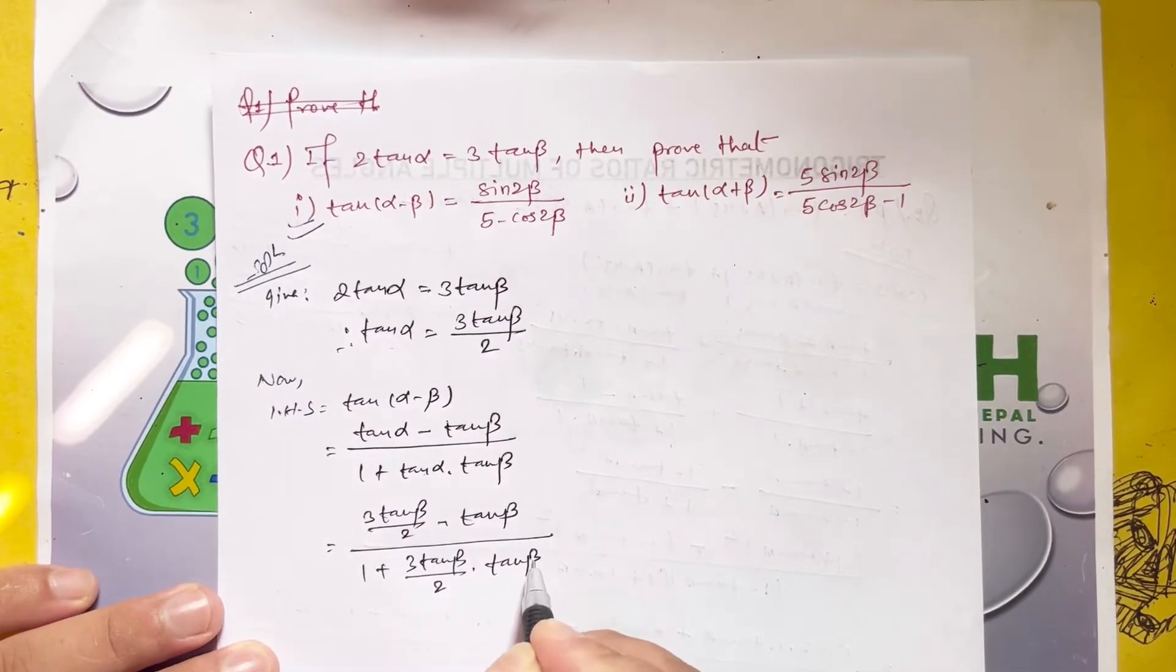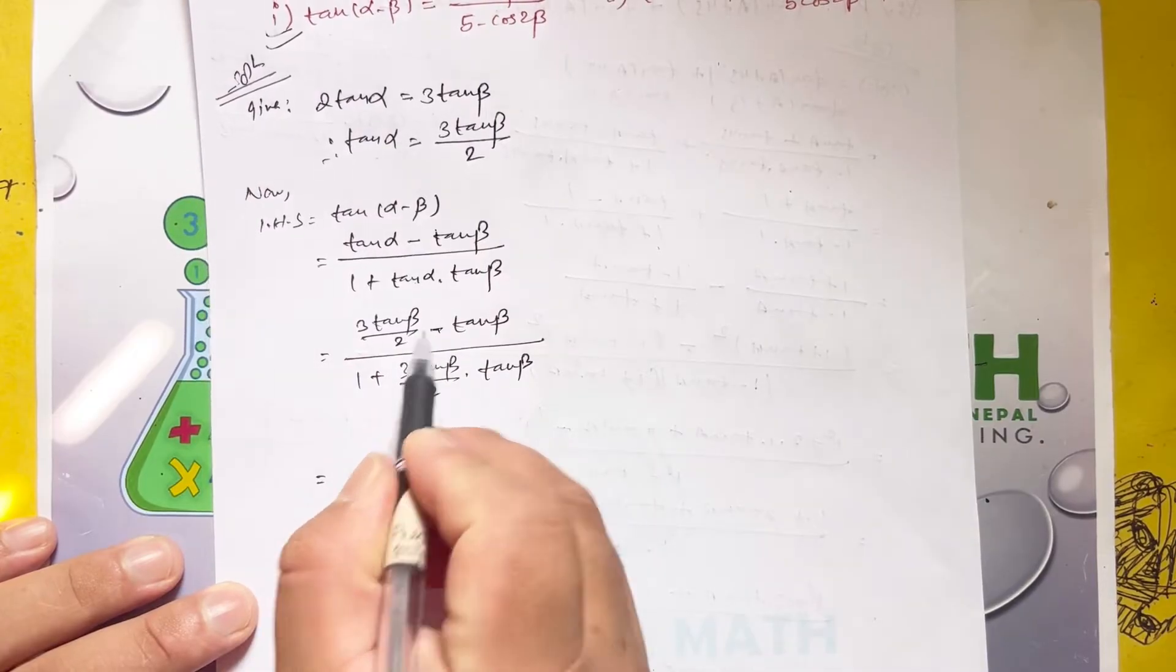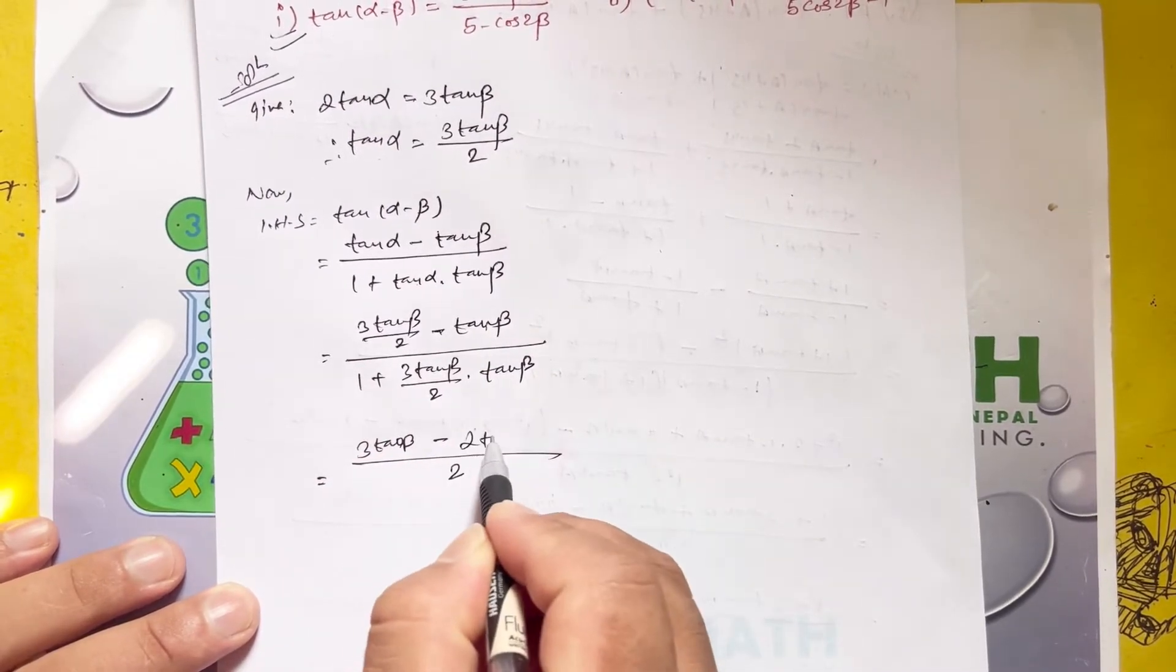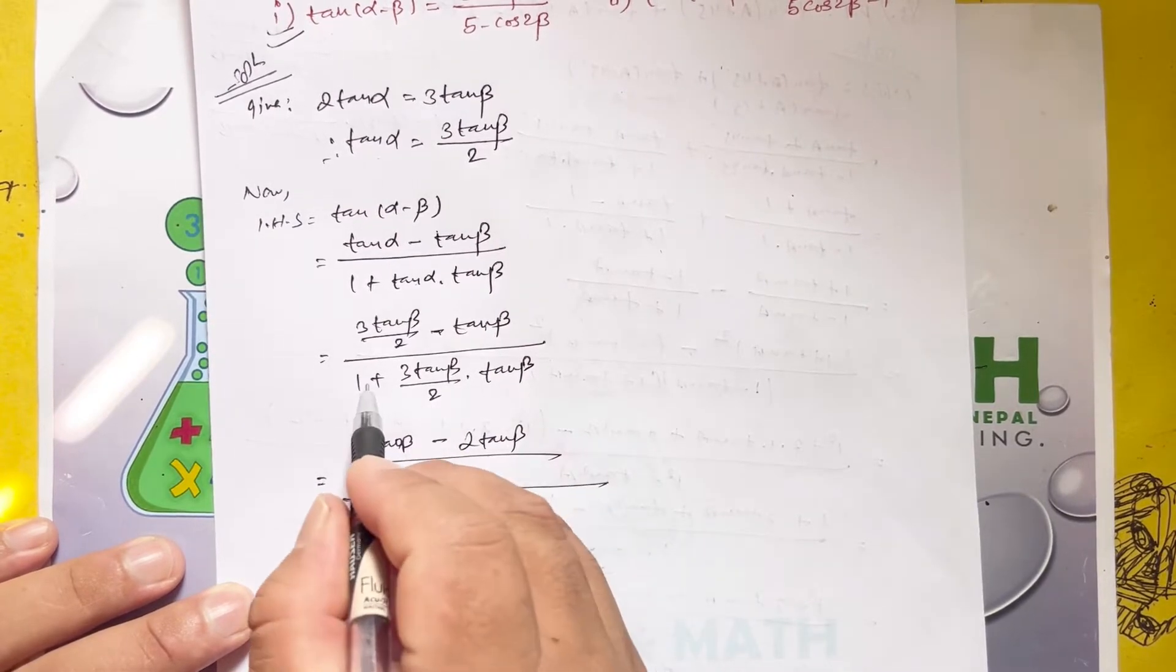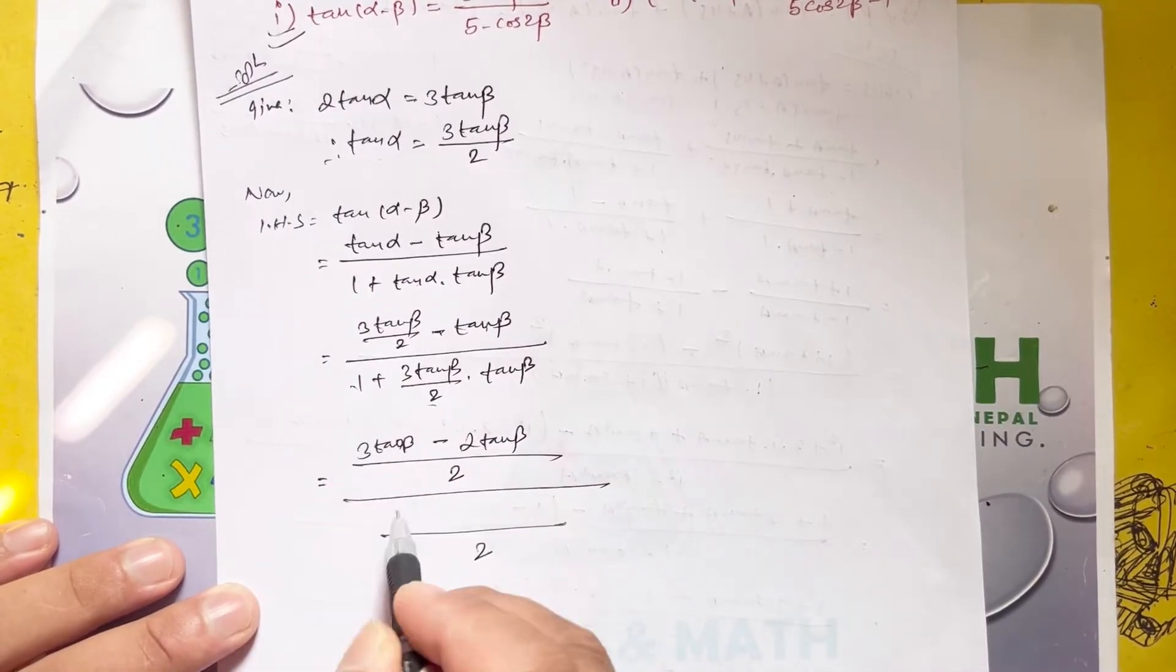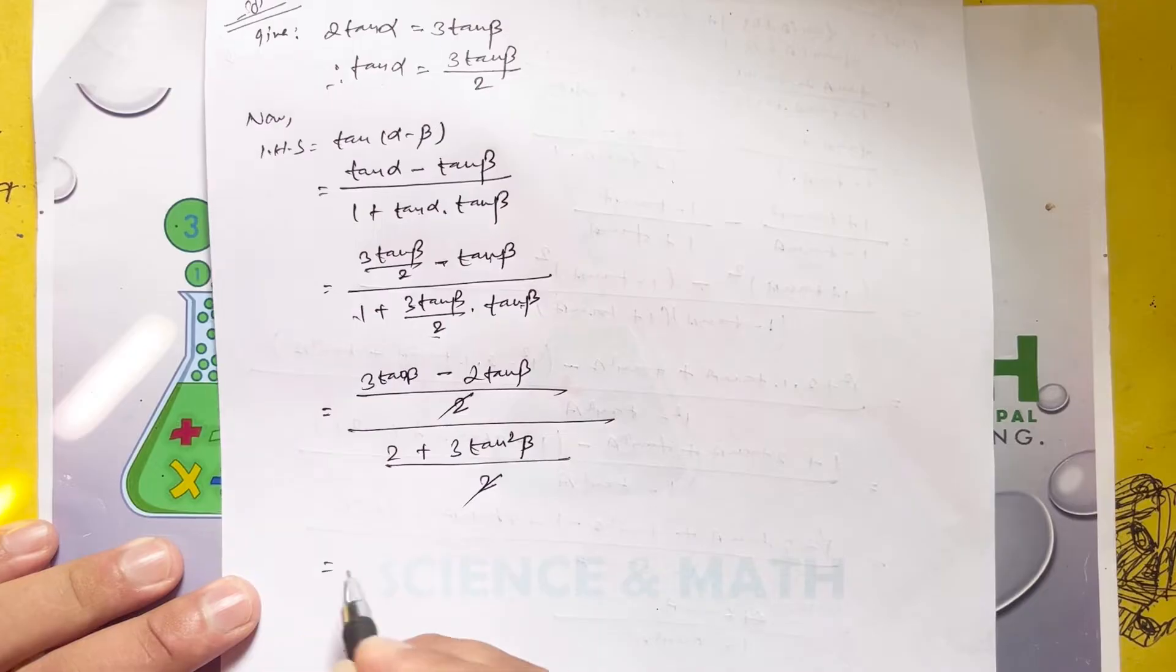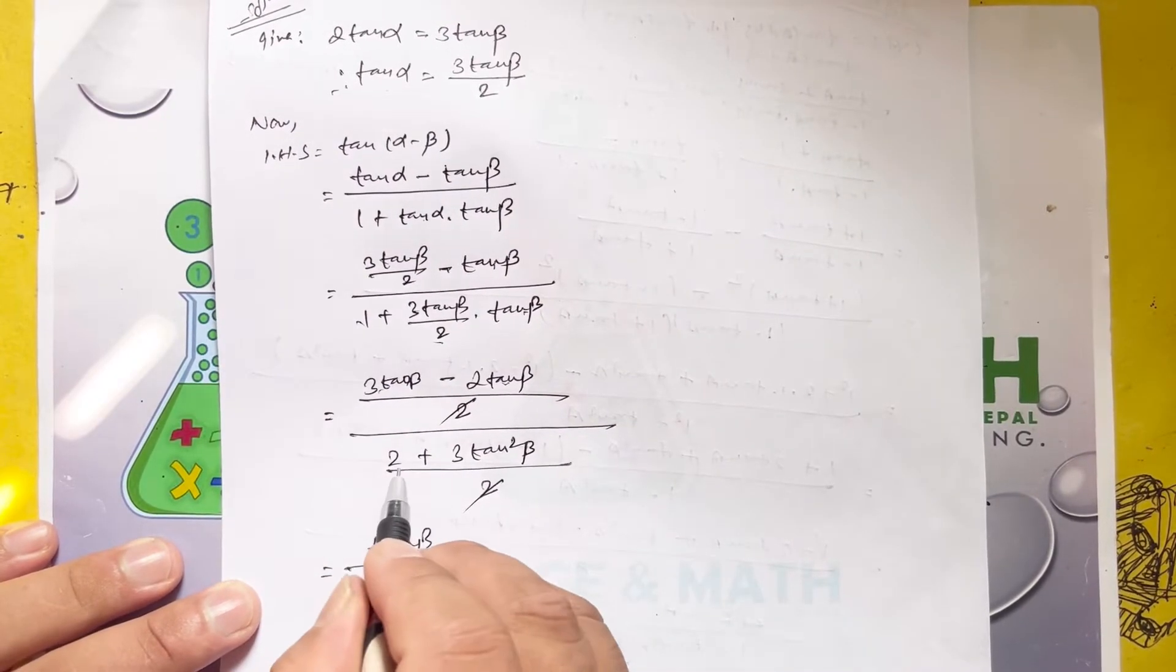Simplifying, LHS equals tan beta times (3 minus 2) divided by 2, over 1 plus 3 tan squared beta divided by 2. This gives tan beta divided by 2 plus 3 tan squared beta.